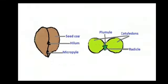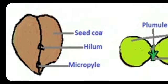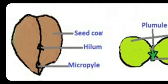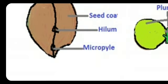Another part of the seed is the hilum. The next one is the Micropyle — a small pore on the seed through which oxygen and water exchange during seed germination.